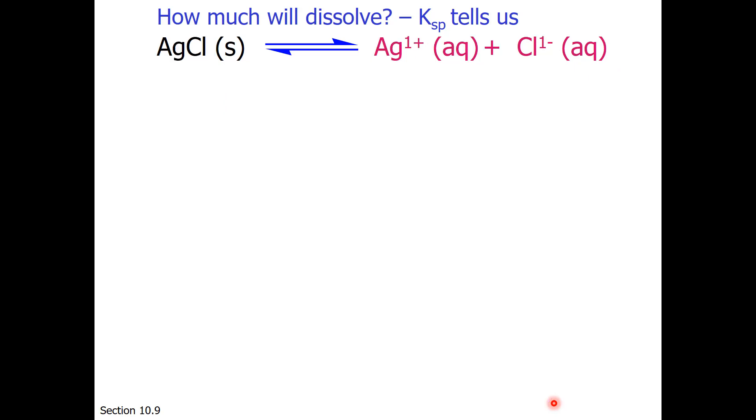What about silver chloride? Once again, the equilibrium constant would be the silver ion times the chloride ion concentration over 1. So Ksp is equal to this expression.